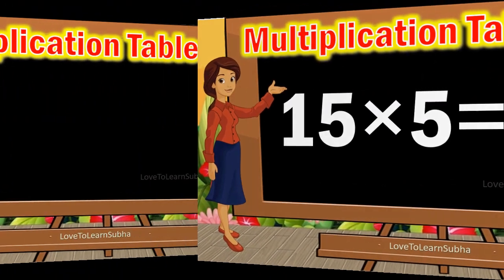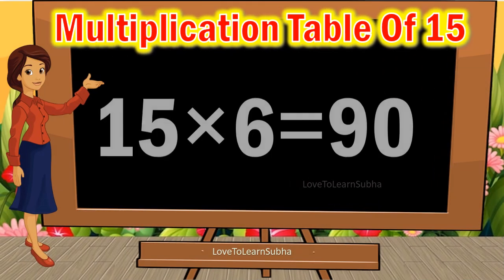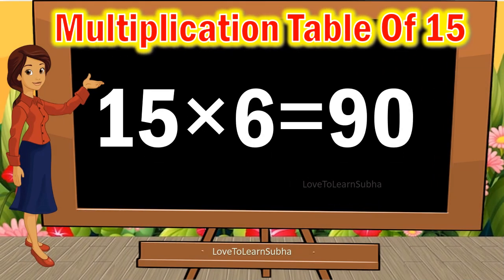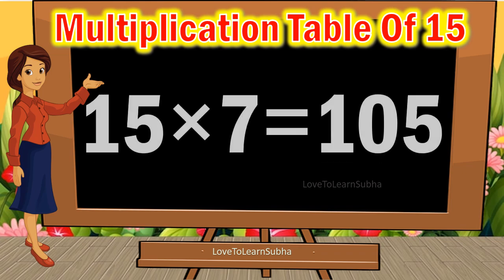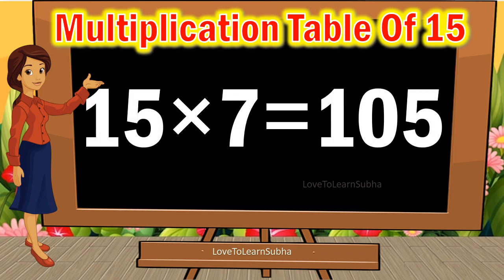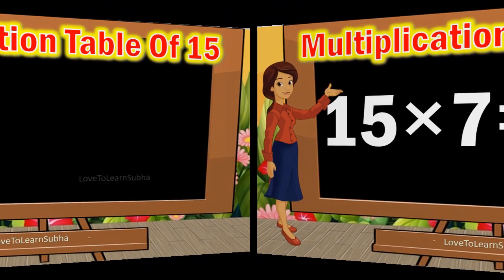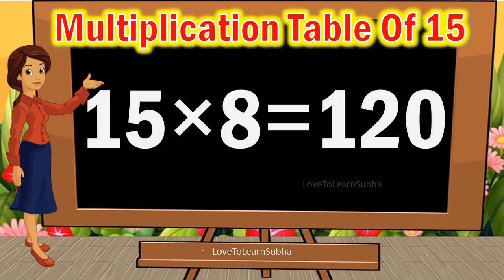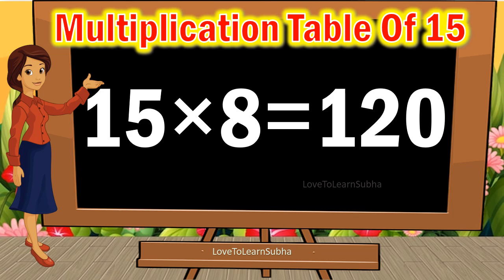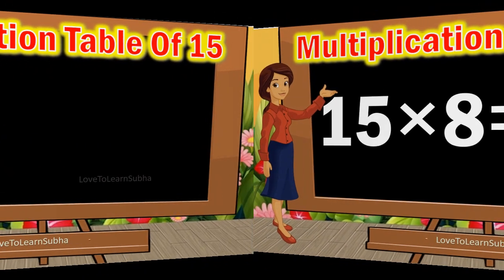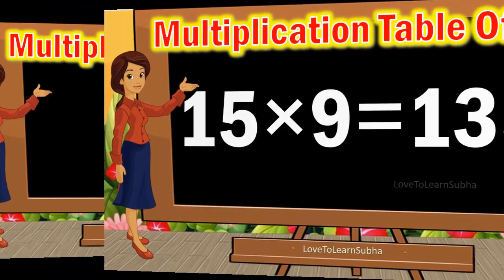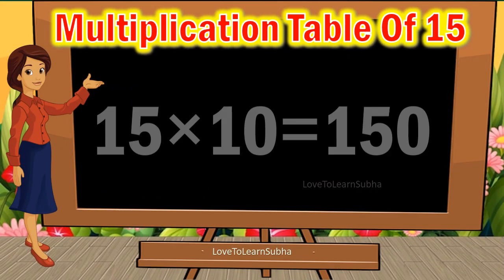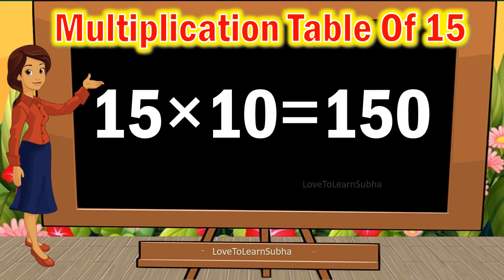15 sixes are 90, 15 sevens are 105, 15 eights are 120, 15 nines are 135, 15 tens are 150.